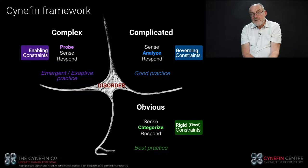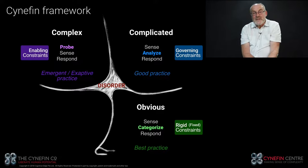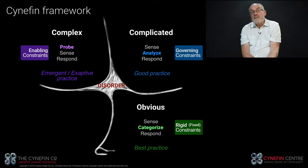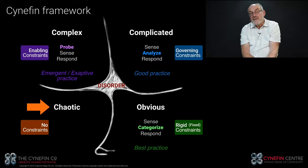Another way of describing exaptation is radical repurposing. For example, there are many things you can repurpose to open a beer bottle in a hotel bar late at night without a proper opener. Repurposing is something human beings are good at, and in biology that's called exaptation. In a complex world, we generally discover novelty through repurposing existing capability. So we don't apply best practice or good practice — practice is emergent, it's exaptive.